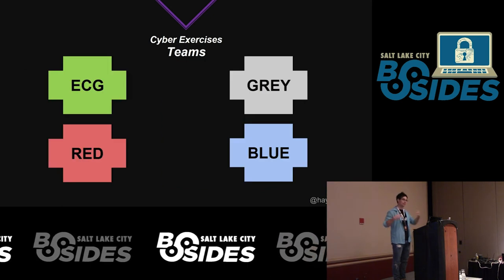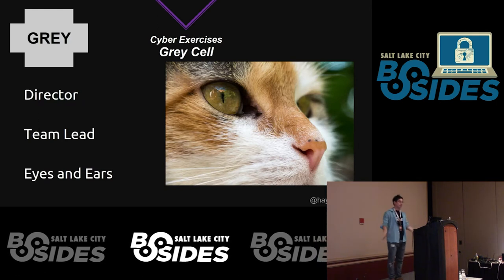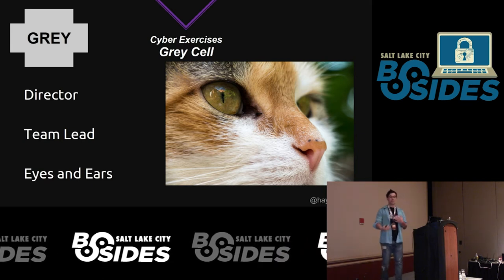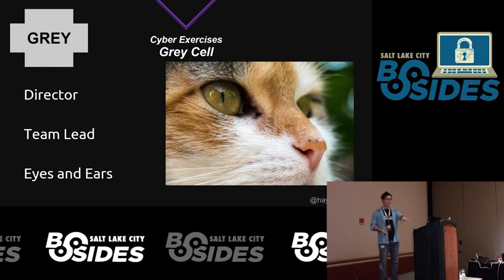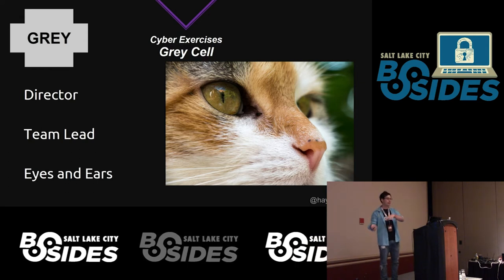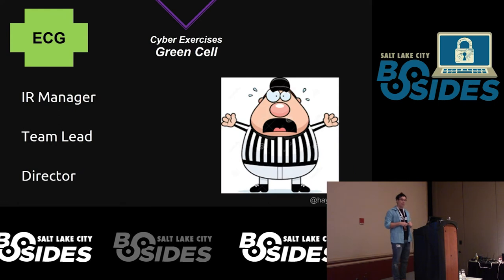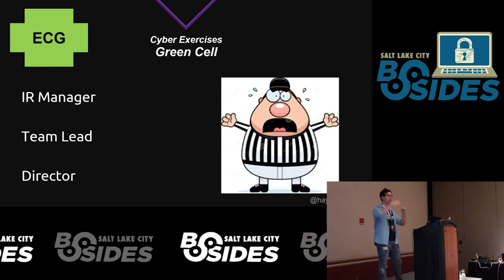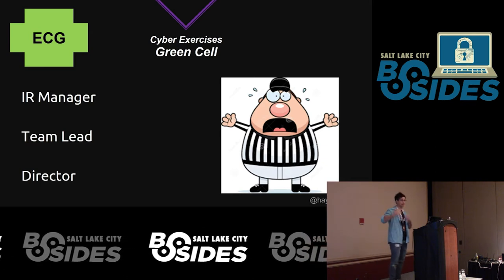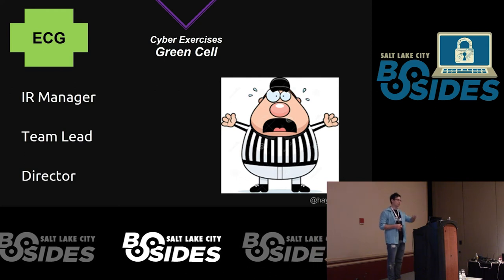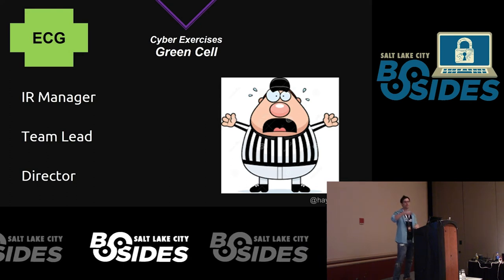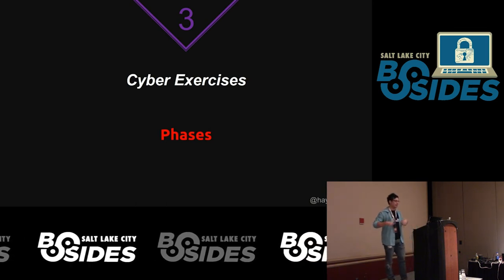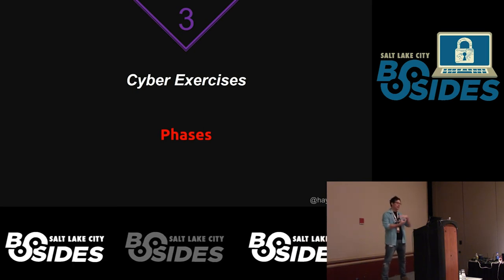The gray team is like a director or team lead — the eyes and ears. If the blue team misses an IOC, the team lead will let them know indirectly to look for that IOC, domain, or IP address. The ECG ensures the objectives are met and that responses from the blue team actually happen. The different phases are planning, execution, and lessons learned.